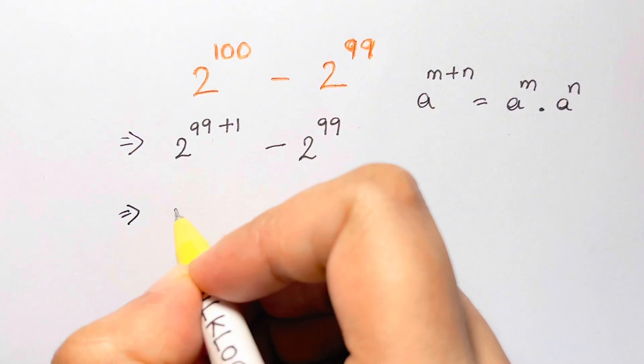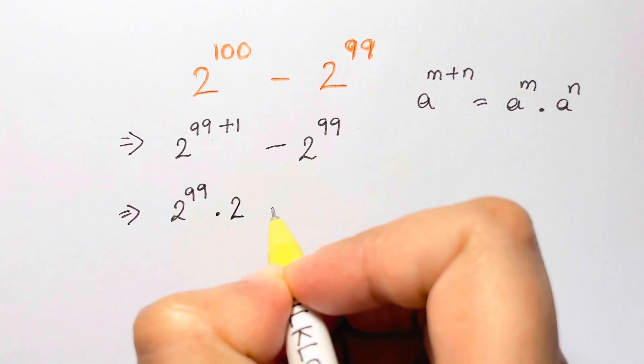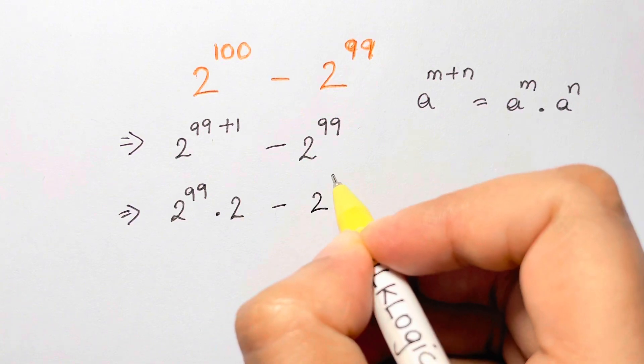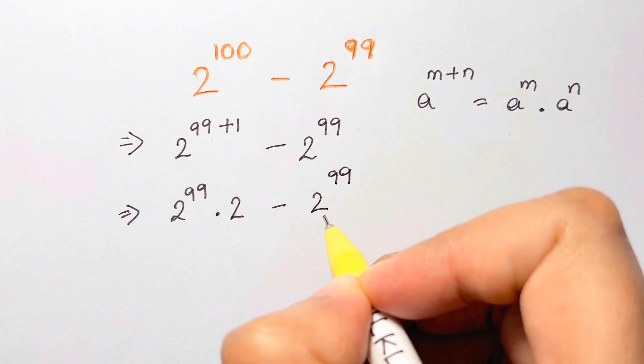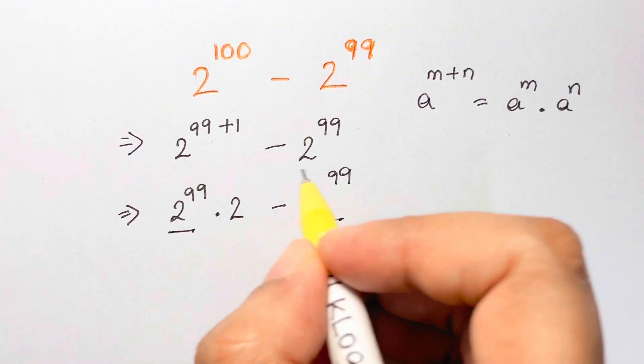So what we have, 2 to the power of 99 times 2 minus 2 to the power of 99. Now here we have the same thing, here we have the same base. So let's take it out common.